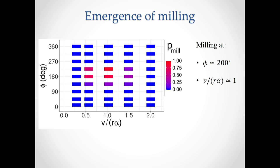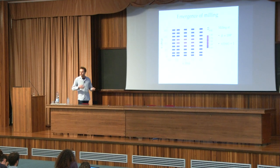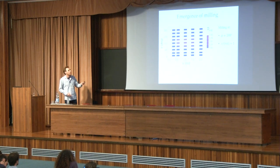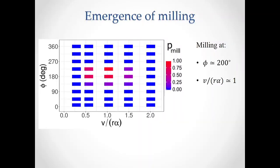Running the simulations, we can see where we indeed get some milling. We see that milling emerges and here we see a bit more in detail where we need some intermediate field of view, so about 200 degrees, and the ratio of speed to angular velocity has to be around one, which was indeed also what we expected.